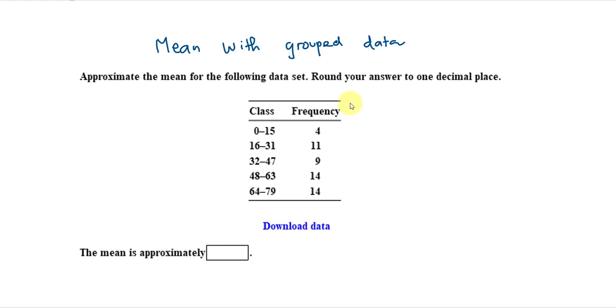So, in the next column here, I will create midpoint values. And to find the midpoint of the first class, I add 0 and 16 and then divide by 2.